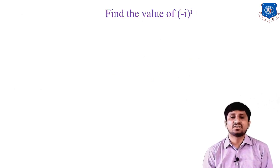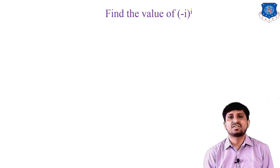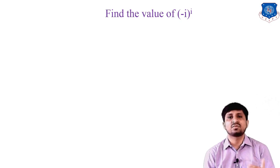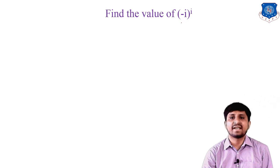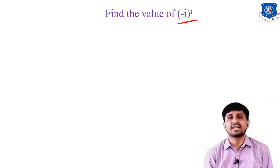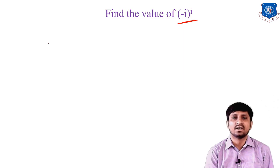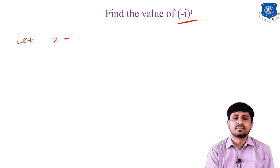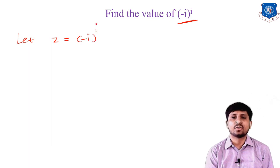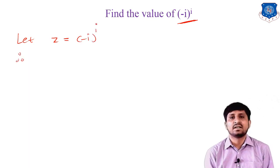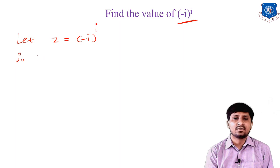Now let's find the value of (-i)^i. Here the base is a complex number and the degree is also a complex number. To find this type of expression, we use logarithm of complex numbers. Let z = (-i)^i and take log on both sides. Since there's no specification, we find the principal value: log z = i·log(-i).